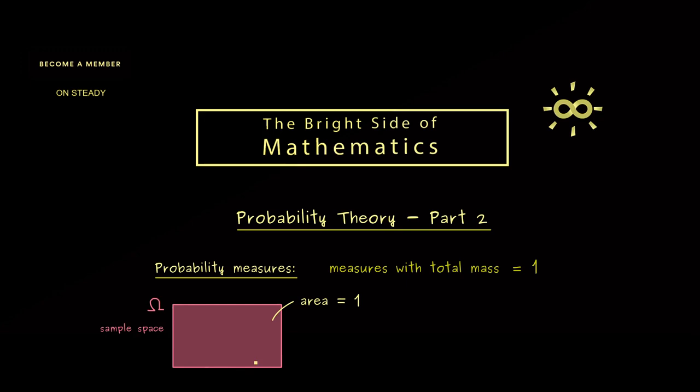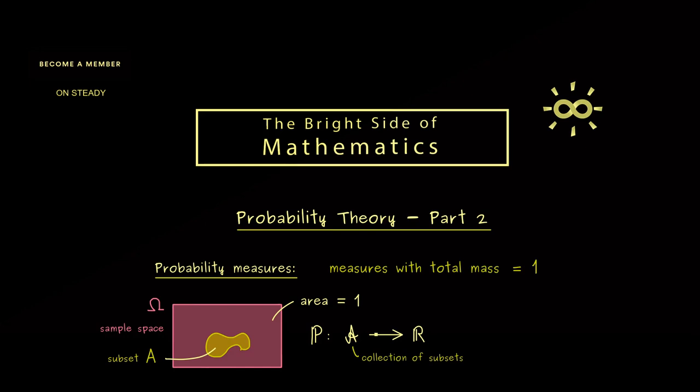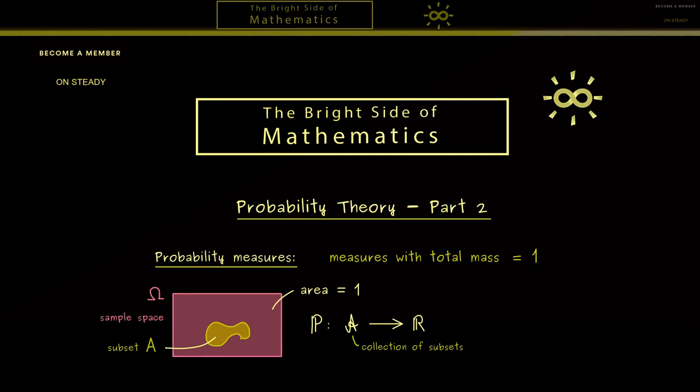Simply because the probability to get any outcome should be 1. And now a probability measure should also tell you the probability for a given subset. So what we want here is simply a map we call P that maps subsets to numbers. Hence, this curved A here should be a collection of subsets. In other words, the best case scenario would be that we have all the subsets of Omega in this fancy A.